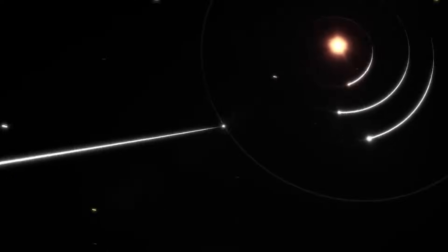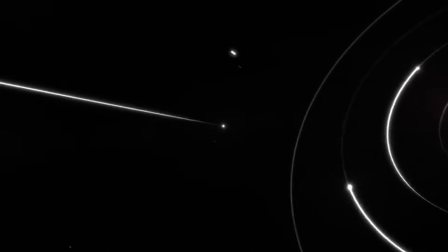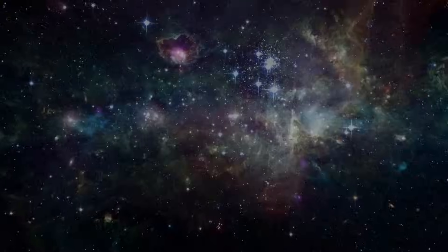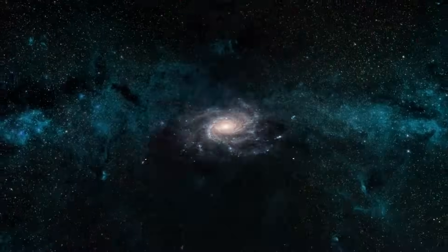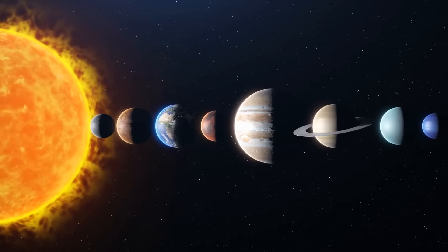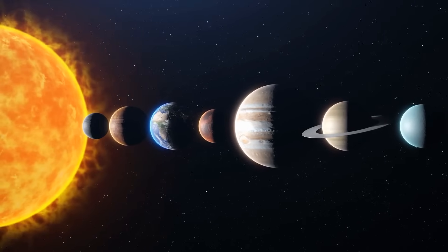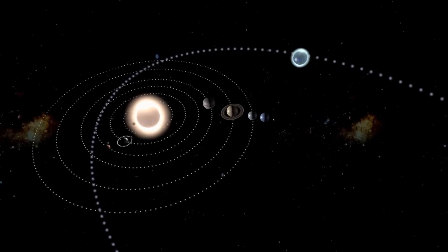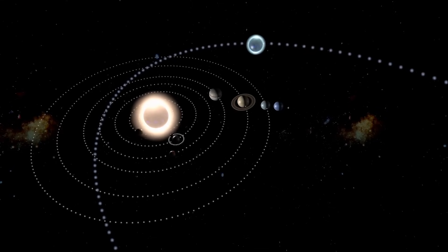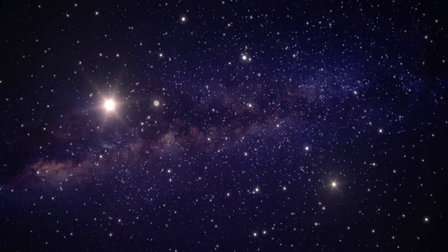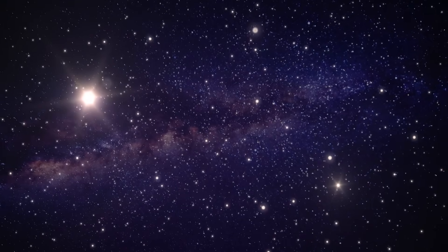'Oumuamua's tale is akin to a space detective novel, with each new piece of information adding to the mystery. Nothing in the solar system resembles its elongated shape. Could there be advantages to this unusual shape factor such as reduced drag or improved stability for interstellar travel? Or is it the outcome of some cataclysmic event beyond our current comprehension?